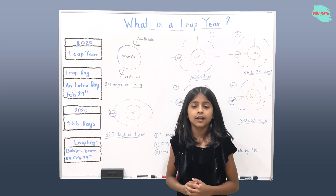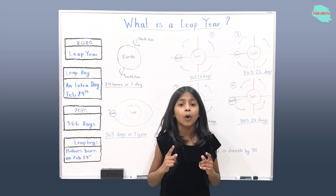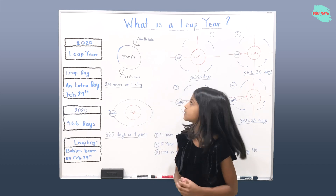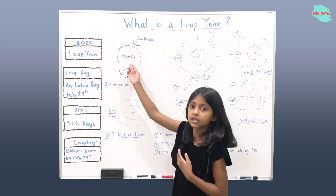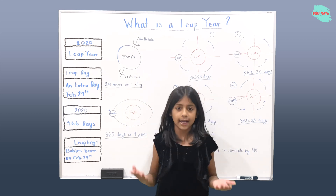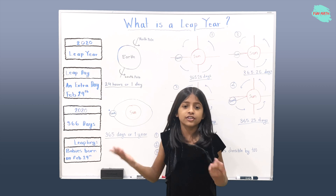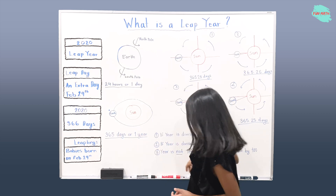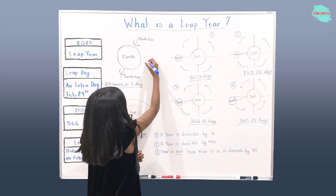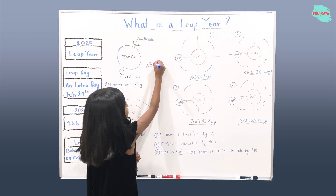You already know that the Earth takes 24 hours, or one day, to complete one rotation around its axis. Here you can see the Earth, North Pole, South Pole, and its axis. The axis is tilted at an angle of 23.5 degrees.